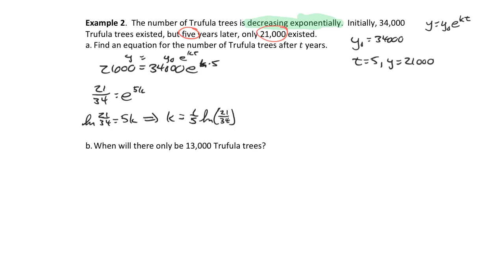We want an equation for the number of Truffula trees after t years. Leaving it as an exact answer: y equals 34,000 times e to the power of one-fifth times ln(21/34) times t. We'll use properties of exponents to simplify — bringing the e and natural log together.